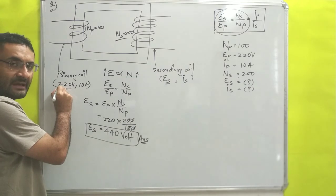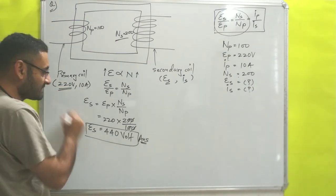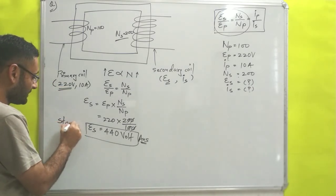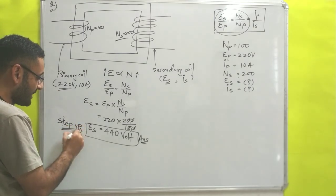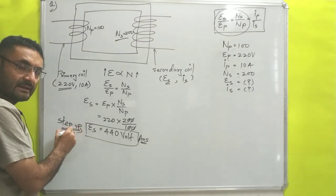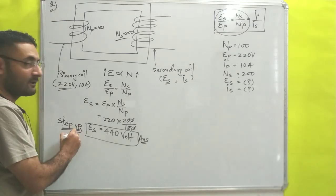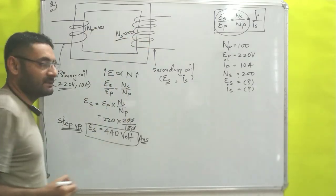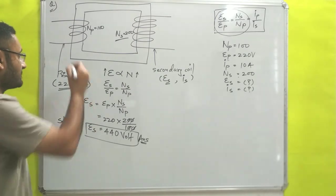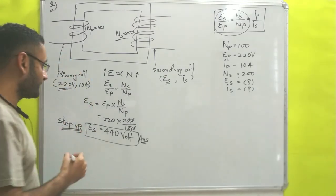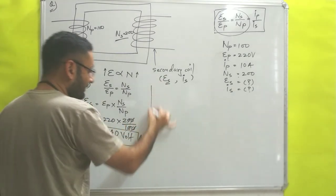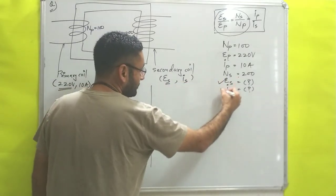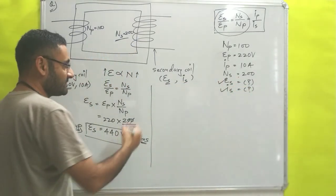This means it is a step-up transformer. In a step-up transformer, the number of turns on the secondary side is always higher than on the primary side. Now we will find the current on the secondary side.